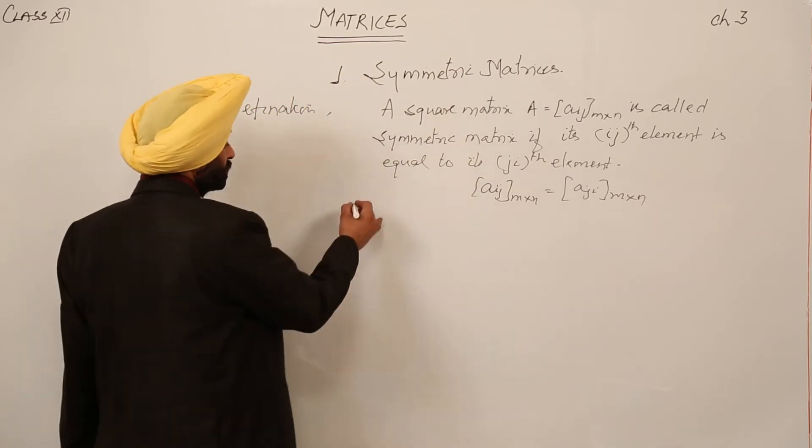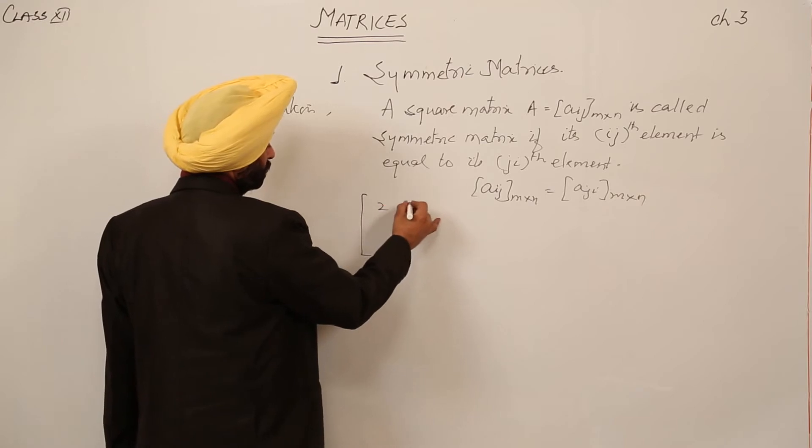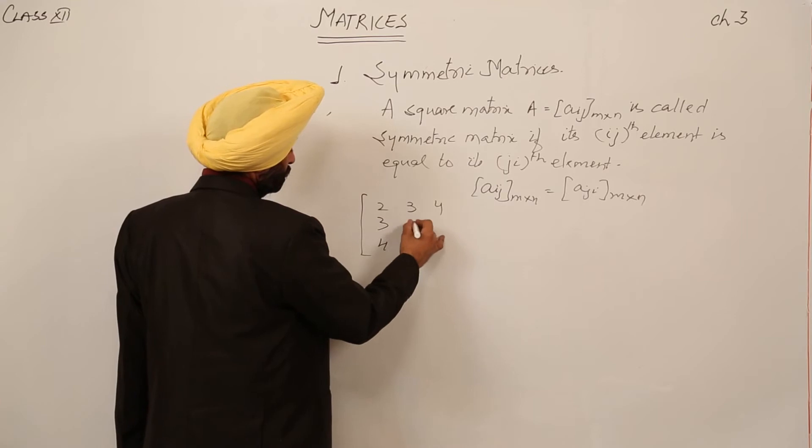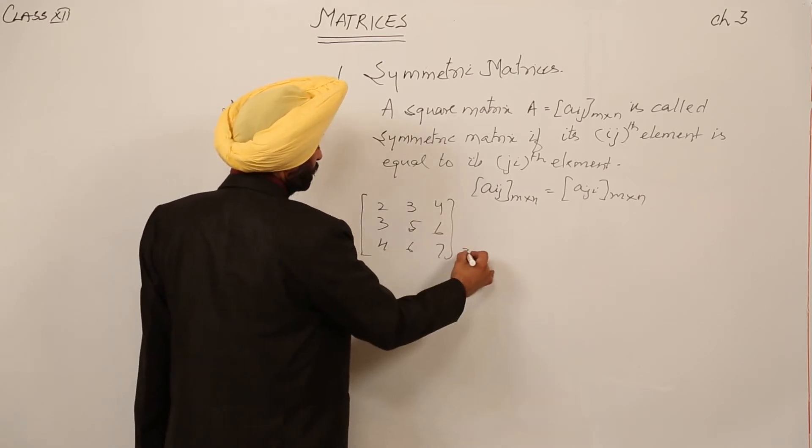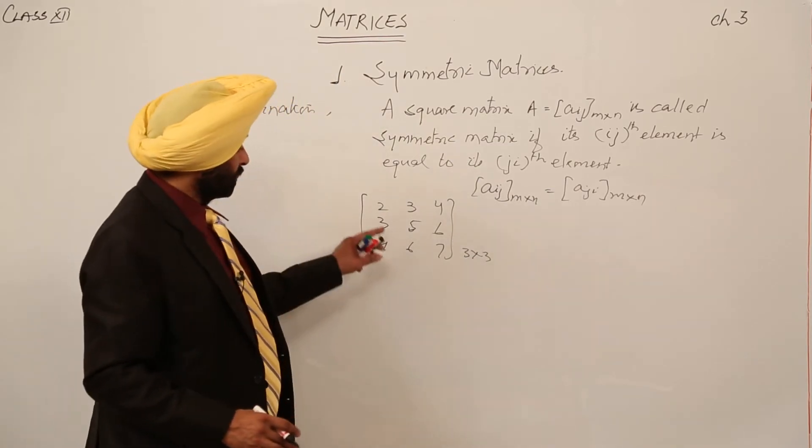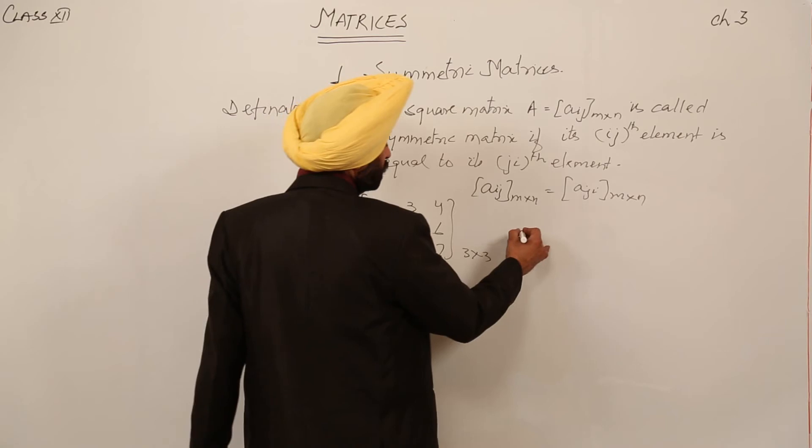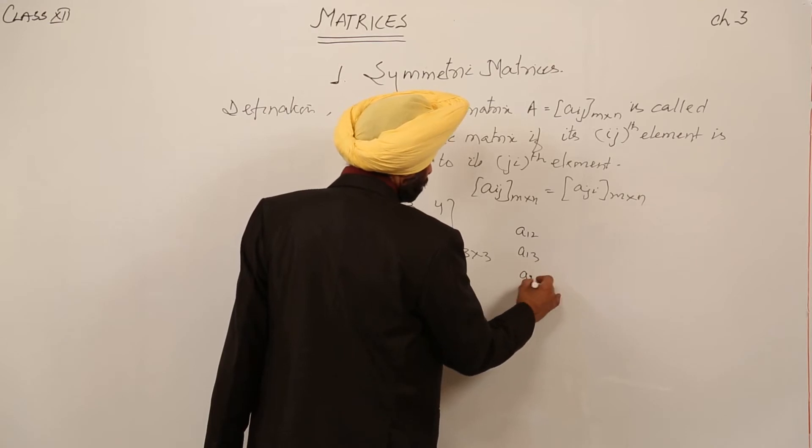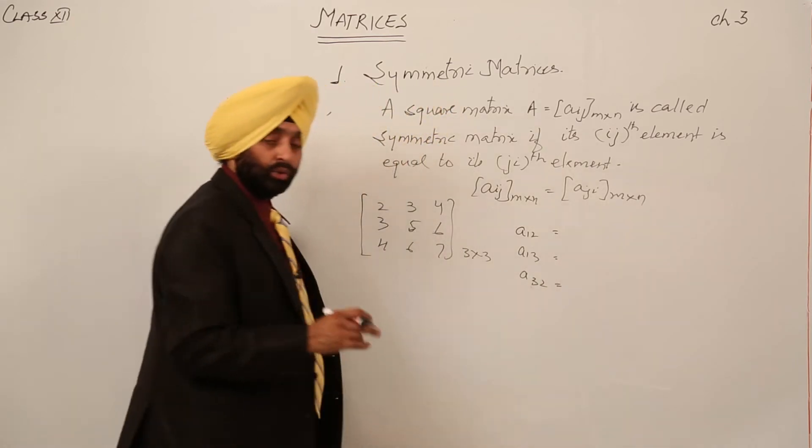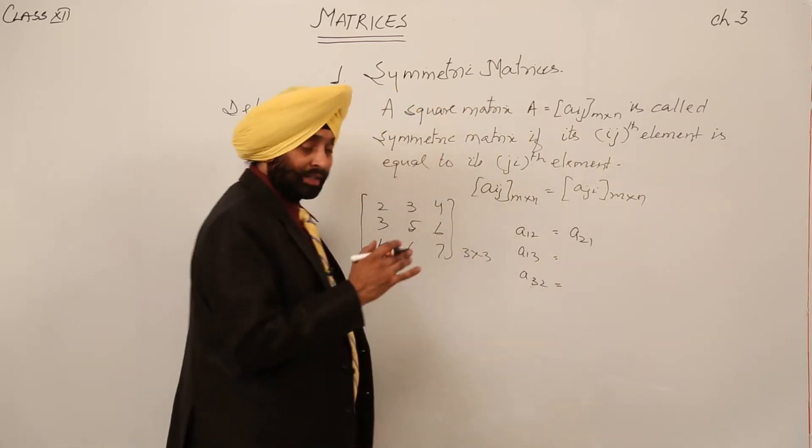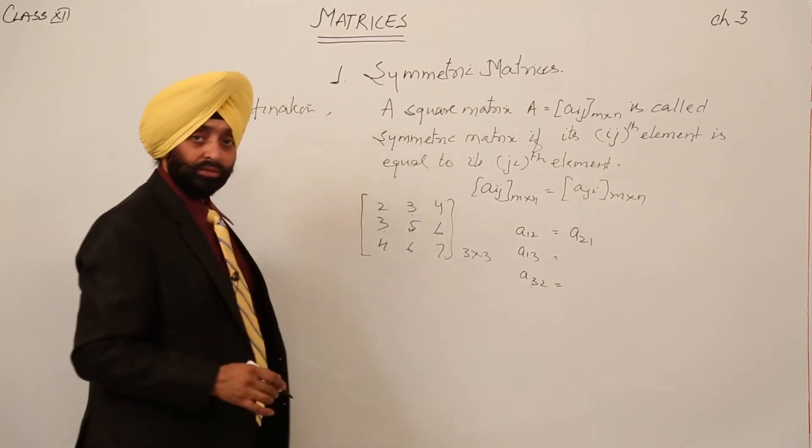Example. Suppose we are having a 3 by 3 matrix. What is A_12 here? A_12, A_13, let it be A_32. It can be any. Now, A_ij should be A_ji. A_12 should be A_21. Let's check it. A_12 is 3, A_21 is 3. Good?